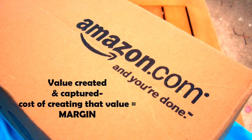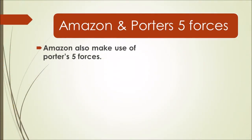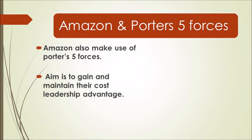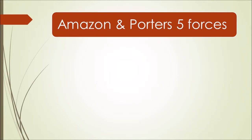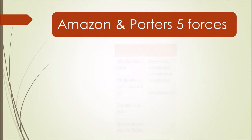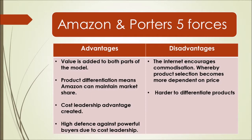This means that the more value the organization can create, the more profitable they are likely to be. Amazon has also shown Porter's Five Forces. This model analyzes the competitive forces in which the company operates to assess the potential for profitability in the industry. Rivalry is higher when competition is fierce in the market and low when competitors are more complacent. The advantages are that value is added to both parts of the model, and product differentiation has meant Amazon is able to stay ahead and maintain their market share. A cost leadership has been created, and their cost leadership advantage means a higher market share for Amazon, creating a high defense against potential buyers.